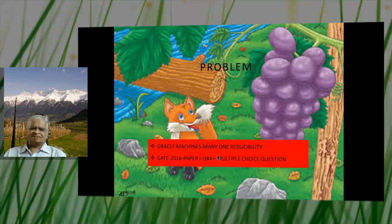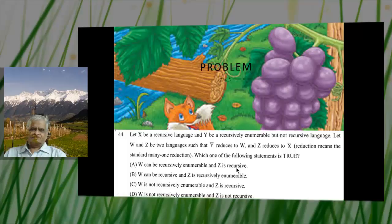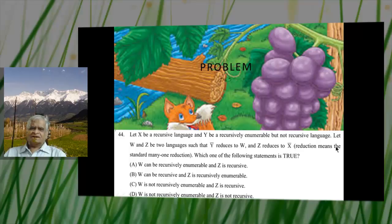It deals with Oracle machines and many-one reducibility. X is given as a recursive language. Y is given as an RE language which is not recursive. W and Z are two other formal languages. Y complement reduces to W, and Z reduces to X complement. Reduction means standard many-one reduction. We need to determine whether W is RE or not RE, and whether Z is recursive or not recursive.